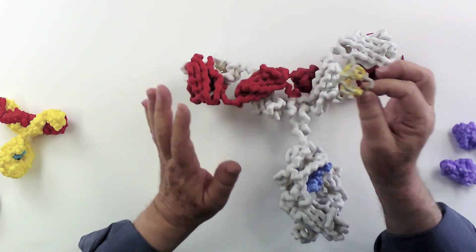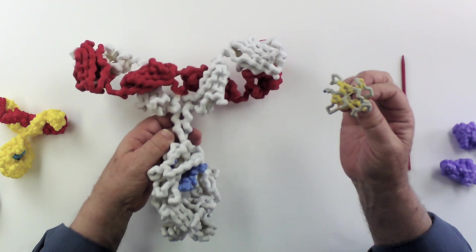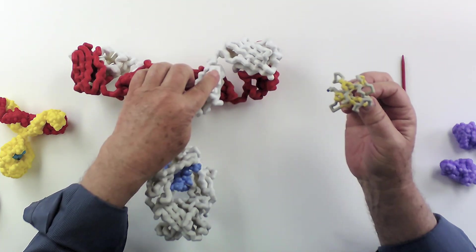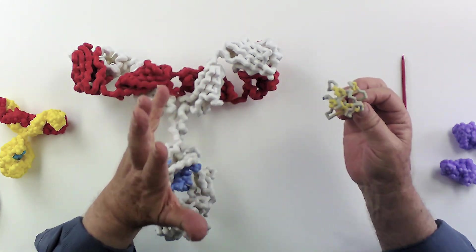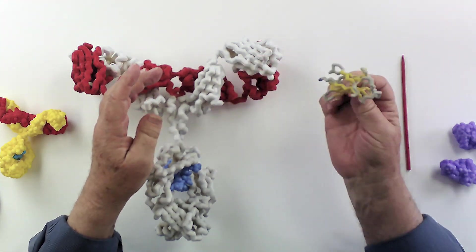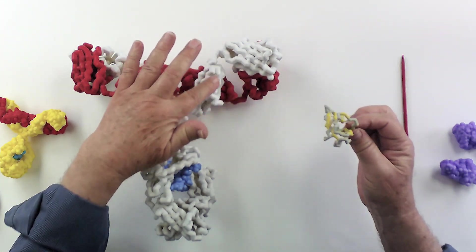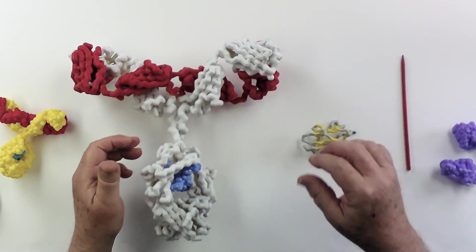These are not all identical in the amino acid sequence, but they are very, very similar. They're recognizable as the same protein fold in each one of these modular units.